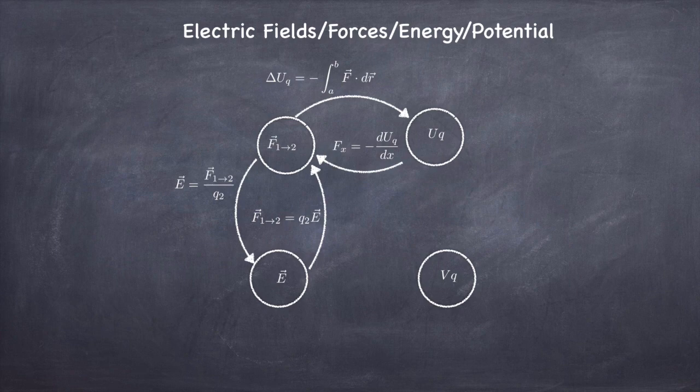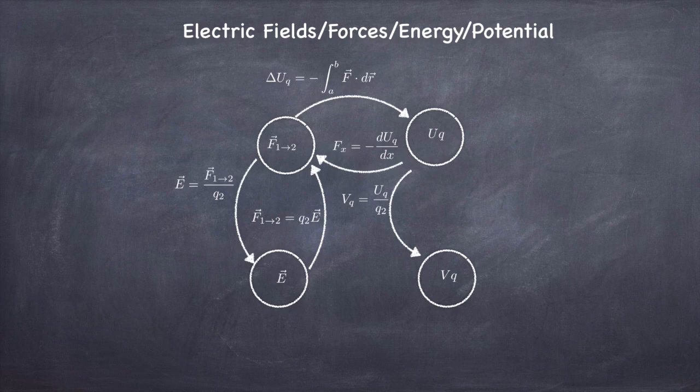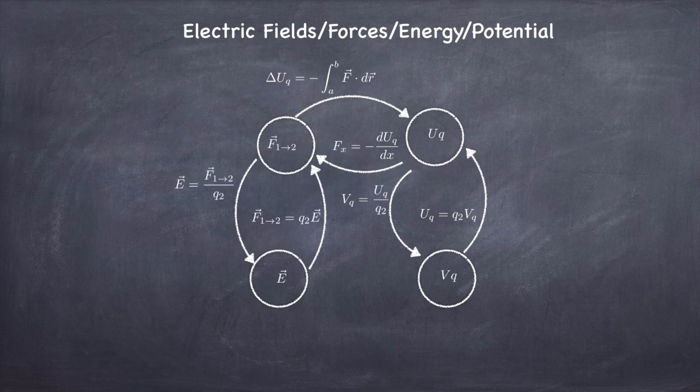How does electric potential fit into this picture? Electric potential is the bubble in the lower right-hand corner, and the easiest way to describe it is that it's the potential energy per unit charge. Just as you get electric field by dividing force by charge, you get electric potential by dividing potential energy by charge. Conversely, if you know the potential, you can get the potential energy by multiplying the potential by the charge. It seems like a straightforward definition.